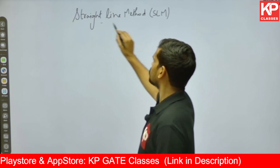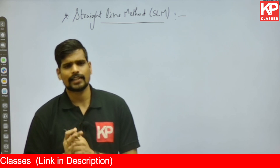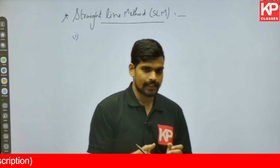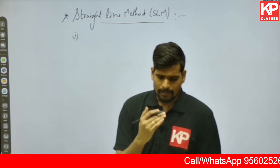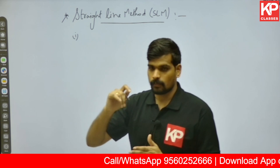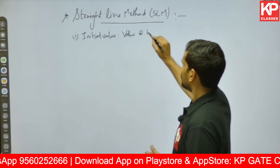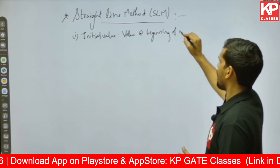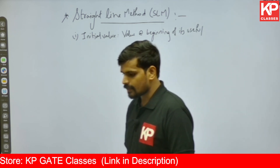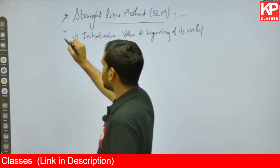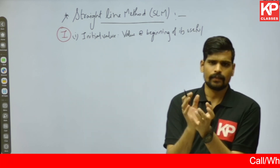Why is it called the Straight Line Method? I will discuss that towards the end of this session. First, let us understand the terminology of the Straight Line Method — these terms have been asked as theoretical questions in past examinations. The first term is Initial Value. The value of an asset at the beginning of its useful life is called the Initial Value. Let us denote Initial Value by I.